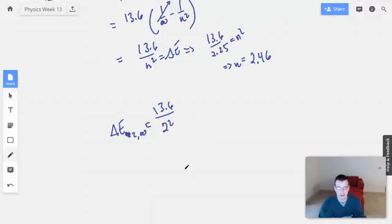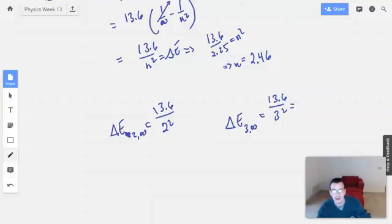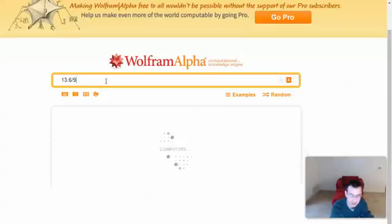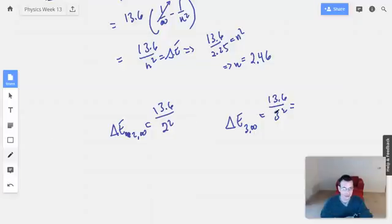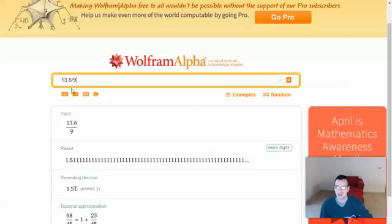But if I do change in energy for 3 to infinity, then that's going to be 13.6 over 3 squared, which should be less than 2.25, which it is, 1.51.